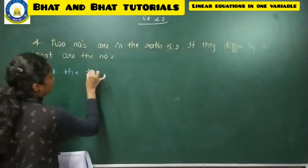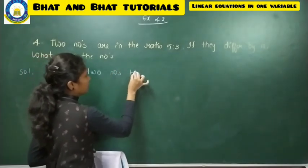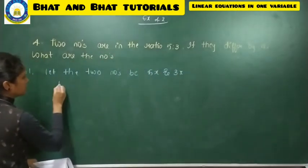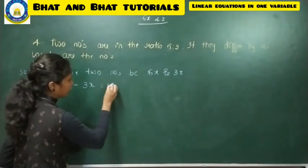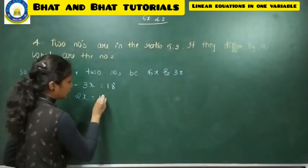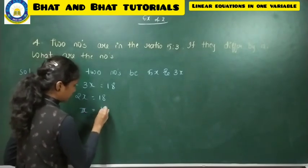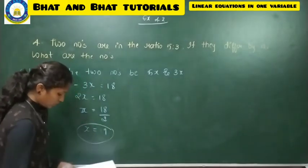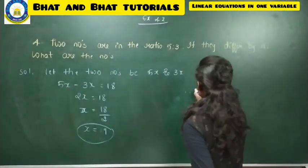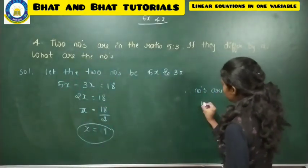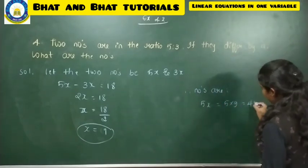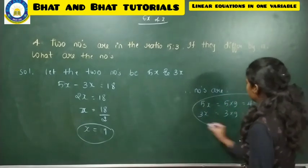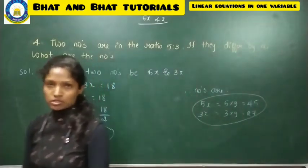Let the two numbers be 5x and 3x. Since they differ: 5x − 3x = 18, so 2x = 18, and x = 9. Therefore the numbers are 5×9 = 45 and 3×9 = 27. So 45 and 27 are the answers — copy this down now.